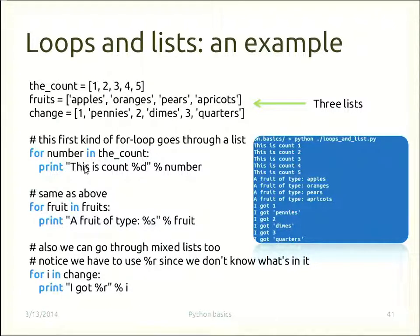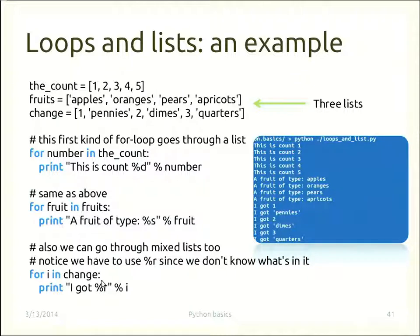For the list the_count = [1,2,3,4,5], the loop 'for number in the_count: print number' outputs 1, 2, 3, 4, 5. The same applies to a list of strings — 'for fruit in fruits: print fruit' prints each fruit. For a mixed list of numbers and strings, using %r in the print statement handles the unknown types, outputting 'I got 1', 'I got pennies', 'I got 2', 'I got dimes', etc.